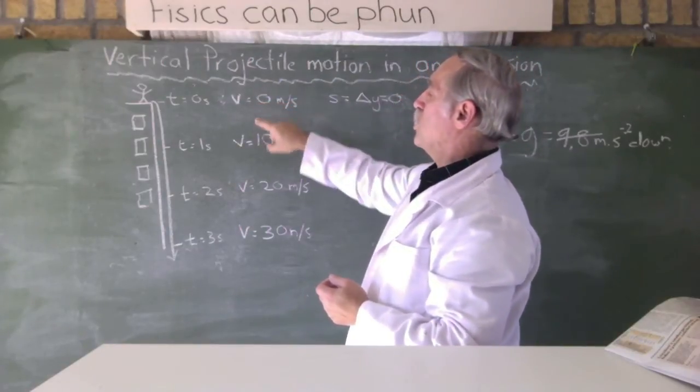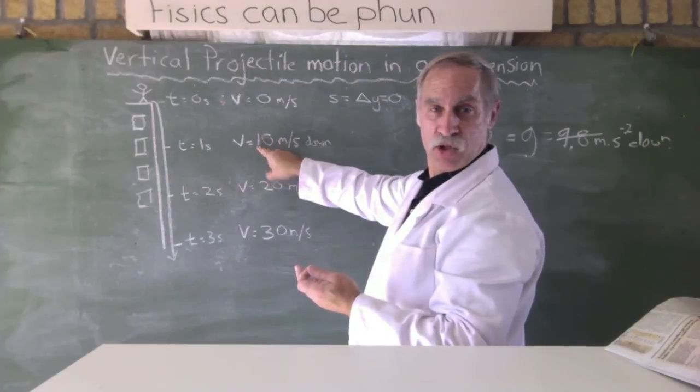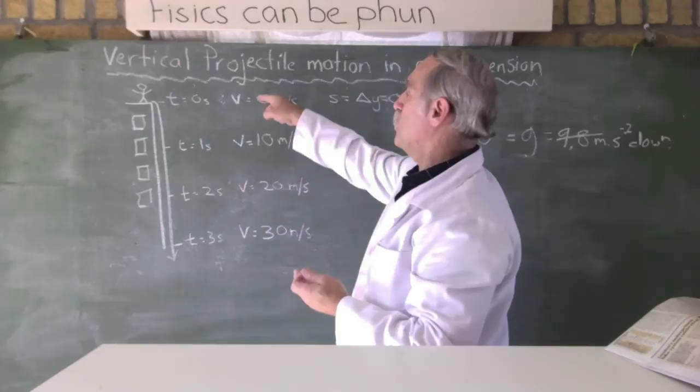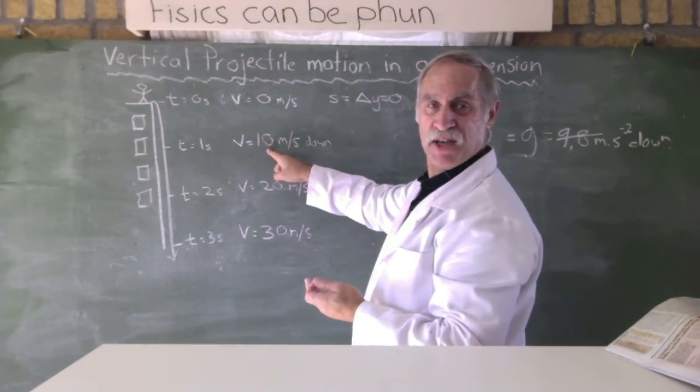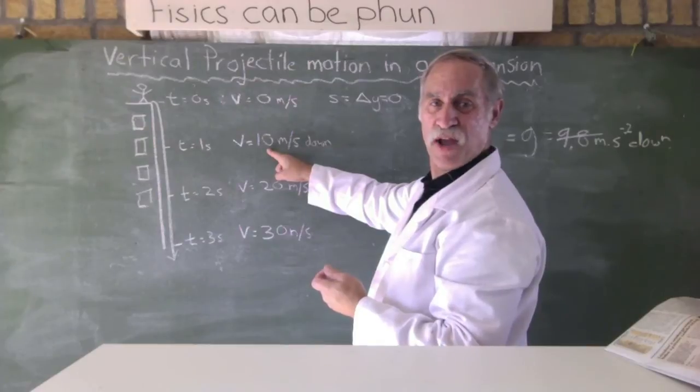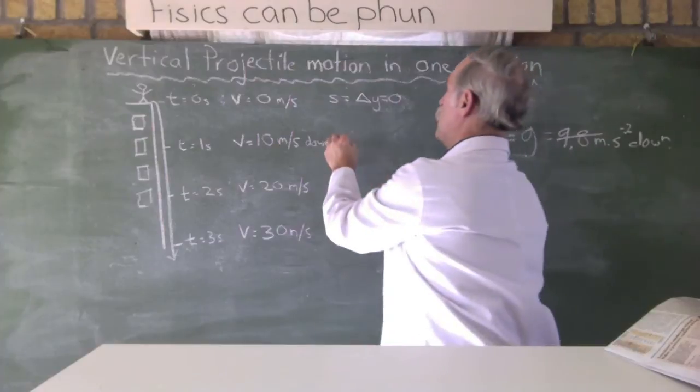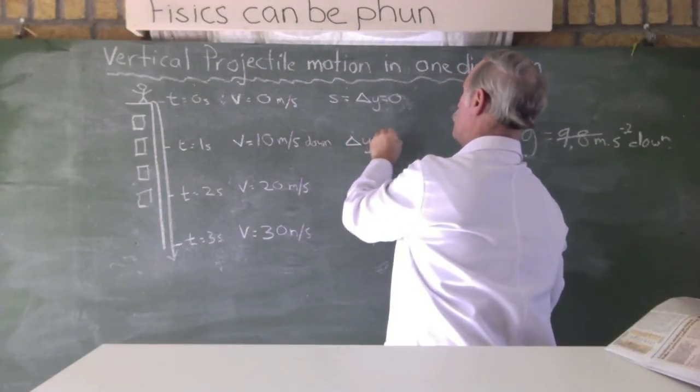At time t equals naught, it's going a velocity of naught. And at the end of one second, it's going 10. So, what's halfway between naught and 10? What's the average velocity between here and here? It's five. Five meters per second. So, it will have traveled the average velocity, which is five meters. So, here, the delta y, or displacement, will be equal to five meters.